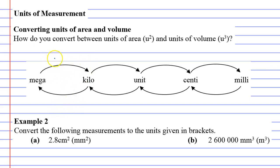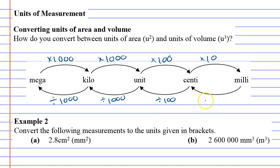First, we'll put our numbers in — 110, with multiplication at the top and division at the bottom. Now, a lot of people do this wrong — I'll show it in green. They go: centimeters to millimeters, centi to milli, times by 10, so 2.8 times 10 is 28, and they say it's 28 millimeters squared.